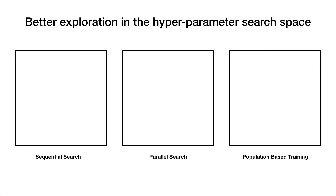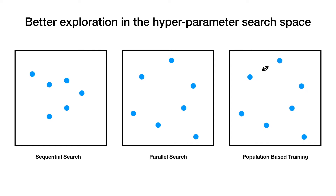Sequential search has been a very popular hyperparameter search method, which changes hyperparameters sequentially after every long training session. Parallel search is another popular method, which only samples the hyperparameters at the beginning and does not change them at all during the whole training procedure. PBT is a hybrid approach that combines the benefits from the two and explores a much larger area of the hyperparameter search space.